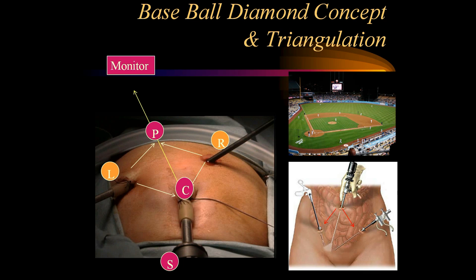The next two important principles are the baseball diamond concept and triangulation. The optical trocar forms a triangle along with the right and left working trocars, and when they meet at the site of the pathology where dissection is about to happen, they make an angle called the manipulation angle. This setting of the optics, the pathology, and the right and left ports form what we call a baseball diamond. Adhering to these basic principles during laparoscopy makes it very easy to proceed.